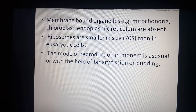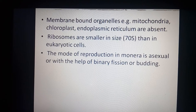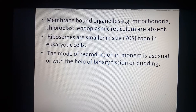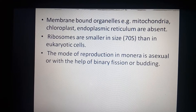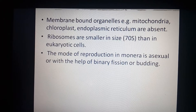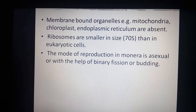The mode of reproduction in Monera is generally asexual — without formation or union of gametes, and a single parent can produce a new individual. Asexual reproduction is followed by binary fission or budding. In binary fission, the parental cell divides from the middle to form two daughter cells — the parental cell disappears as two new daughter cells are formed. In budding, a small outgrowth is produced on the body of the organism.